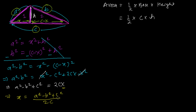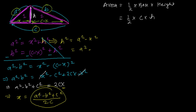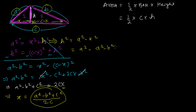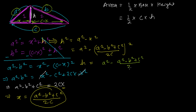Now, from the first equation, h² = a² − x². Substituting x = (a² − b² + c²) / 2c, we get h² = a² − [(a² − b² + c²) / 2c]². Taking the square root gives h = √[a² − ((a² − b² + c²) / 2c)²].